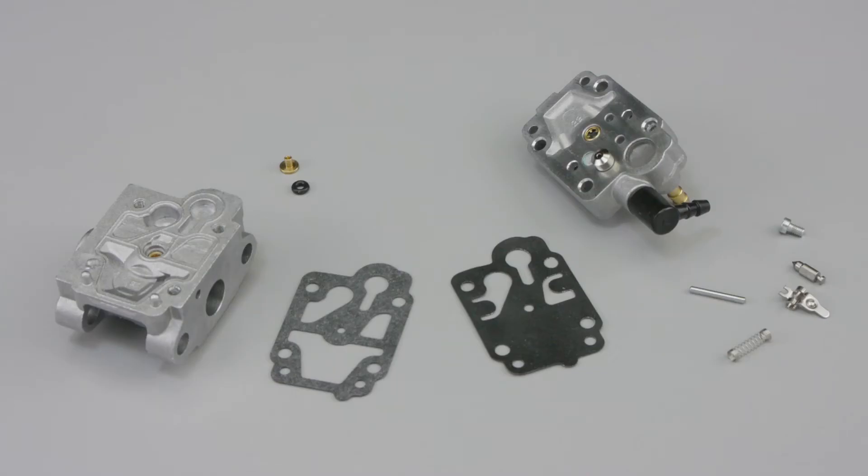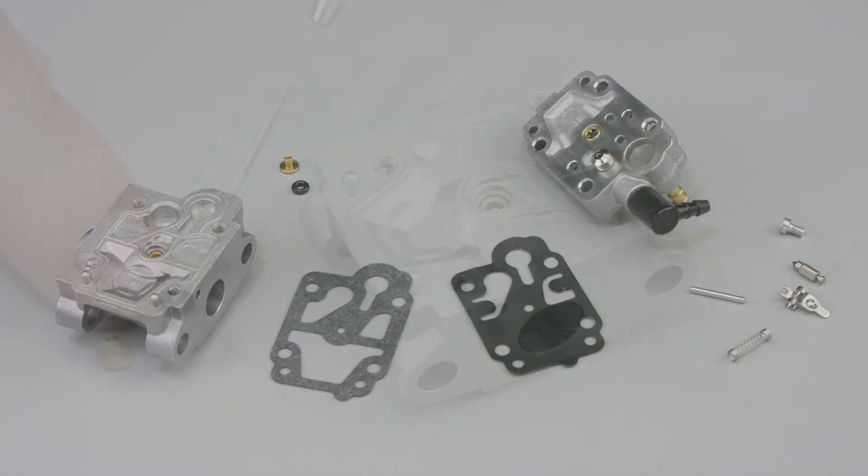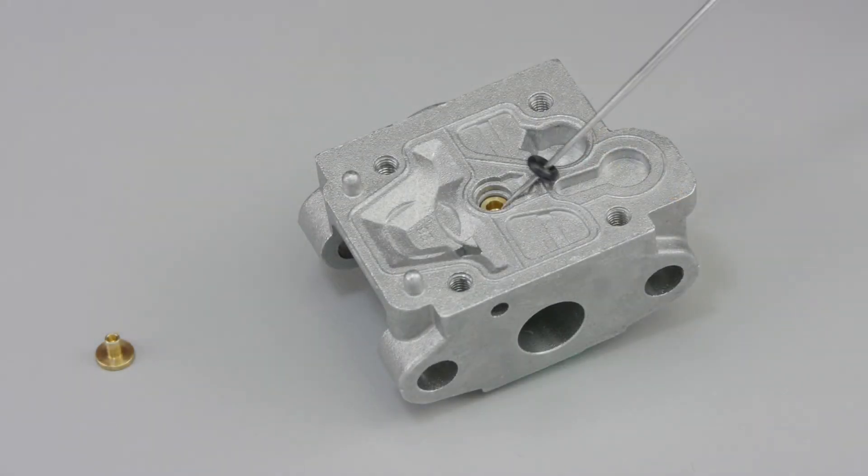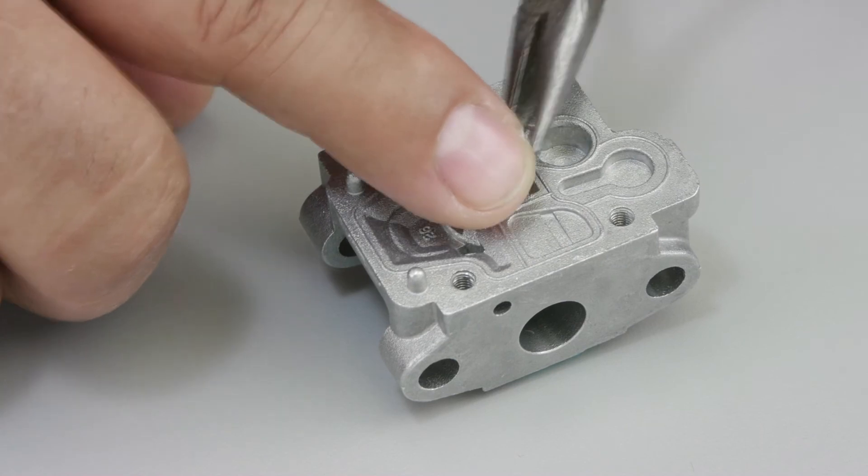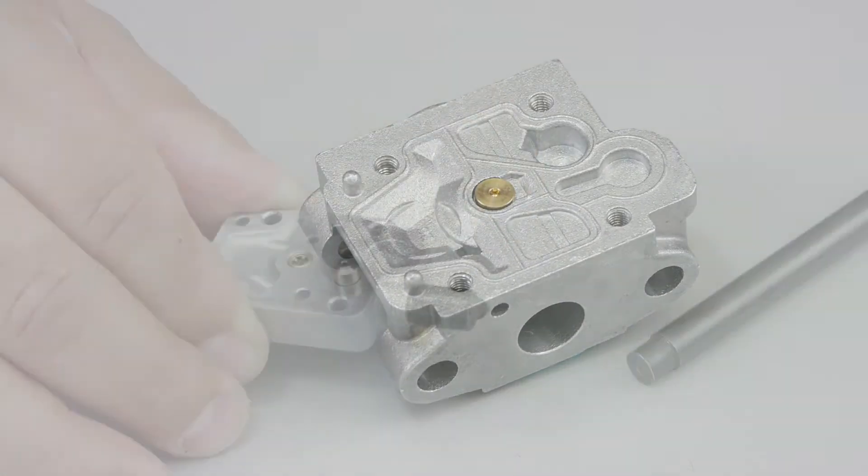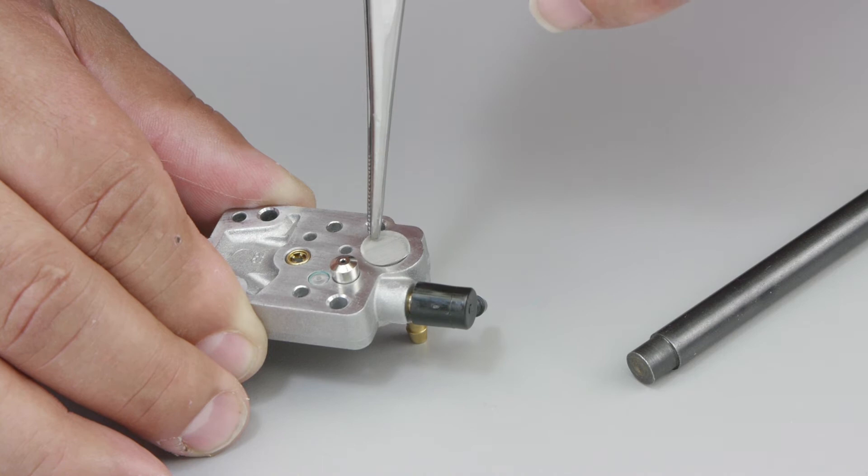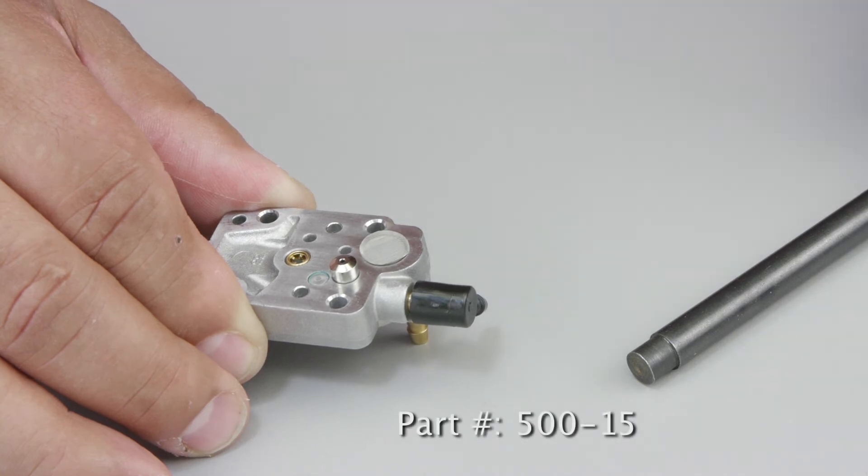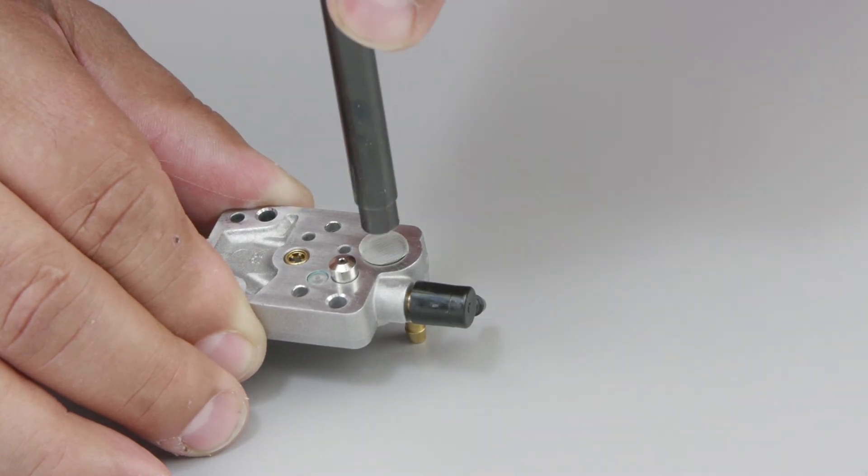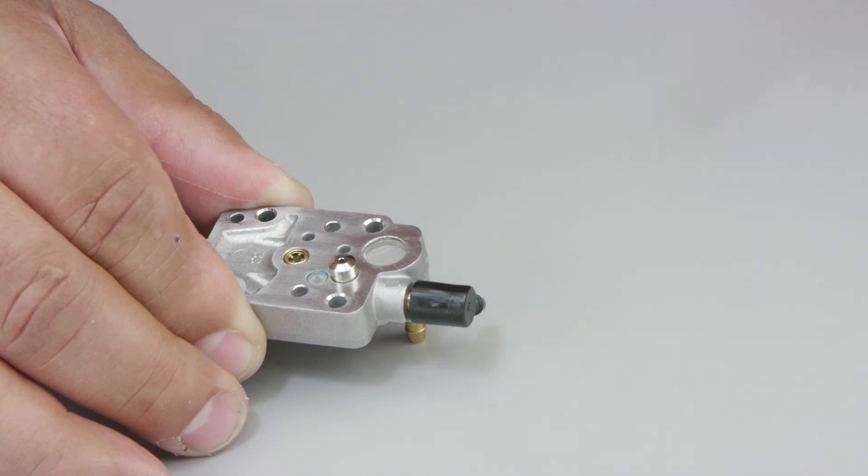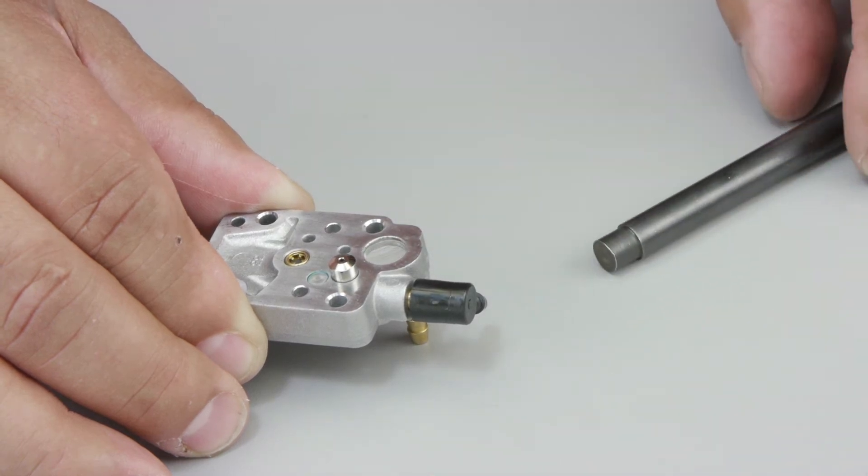It's time to reassemble the carburetor. Begin by reassembling the main jet o-ring and main jet into the pump side of the body. Install the fuel inlet screen into the fuel pump cover using tool number 500-15. The screen should be pressed to the screen pocket step and fit flush with the pocket wall.